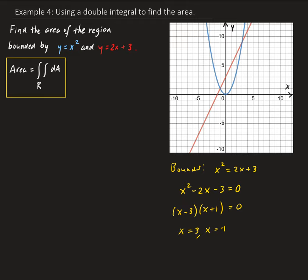I'm going to go ahead and mark the boundary points on the graph. I'll use green — so we have negative 1 marked here, and then over here at 3.